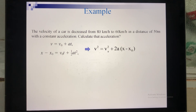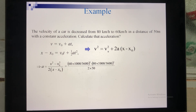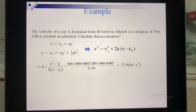After combining, you have one equation with one unknown, A. You have a final velocity of 60 km/h, an initial velocity of 80 km/h, and a distance of 50 meters. Substituting these numbers gives you the acceleration. The result is negative, which means the velocity of the car is decreasing — as expected for deceleration.